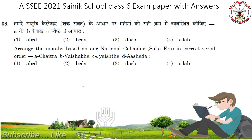Arrange the months based on our national calendar Saka era in correct serial order. A: Chaitra, B: Vaishakha, C: Jyaistha, D: Ashadha. The answer will be Chaitra, Vaishakha, Jyaistha, Ashadha — A, B, C, D.